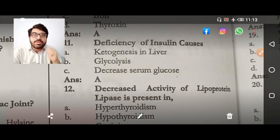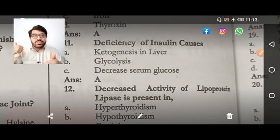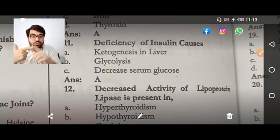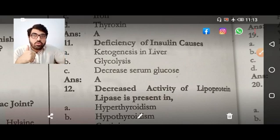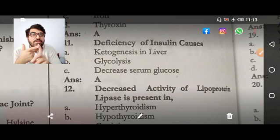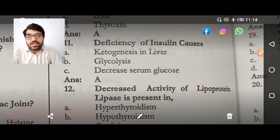Deficiency of insulin causes ketogenesis in the liver — this explains the pathogenesis of DKA. Normally, insulin inhibits lipolysis and ketogenesis. When there is a deficiency of insulin, ketogenesis occurs. So insulin inhibits ketogenesis, but in its absence, ketogenesis takes place.